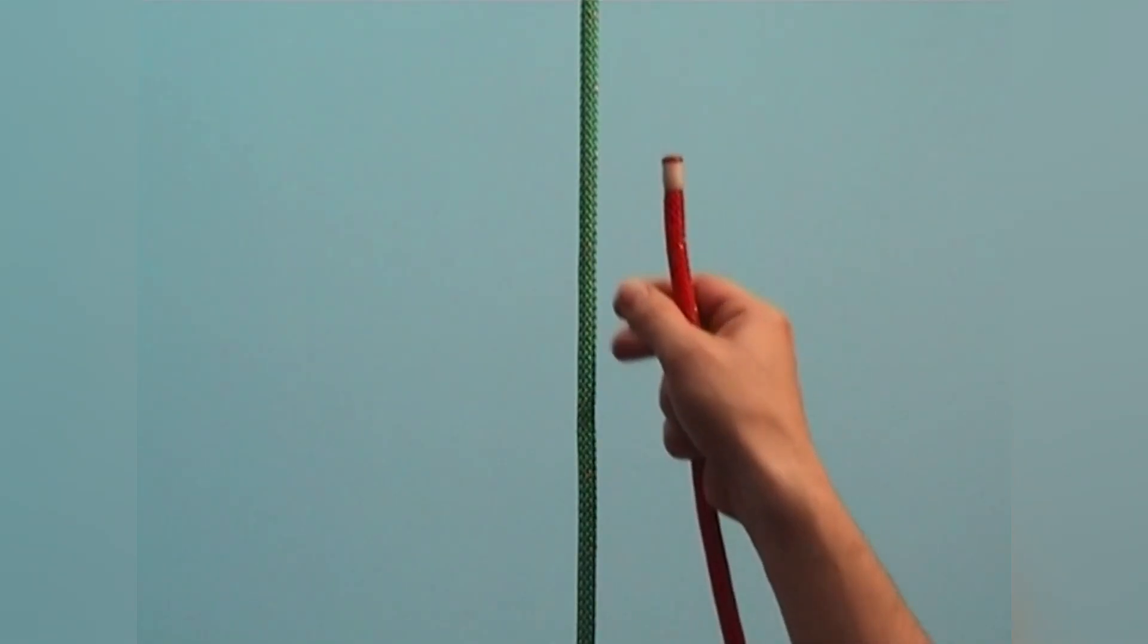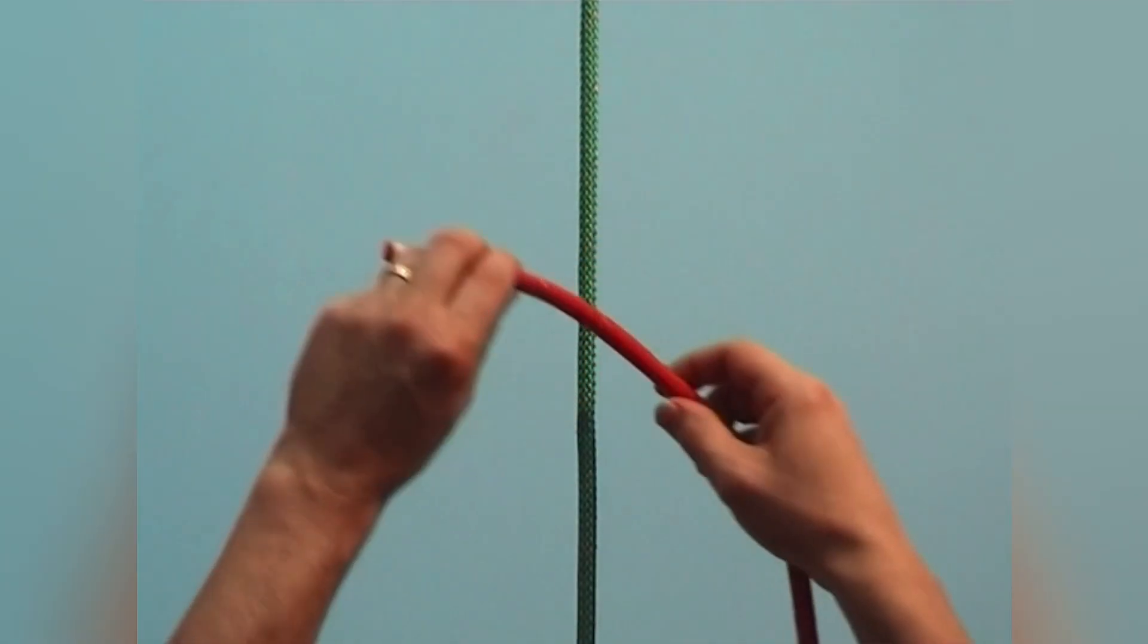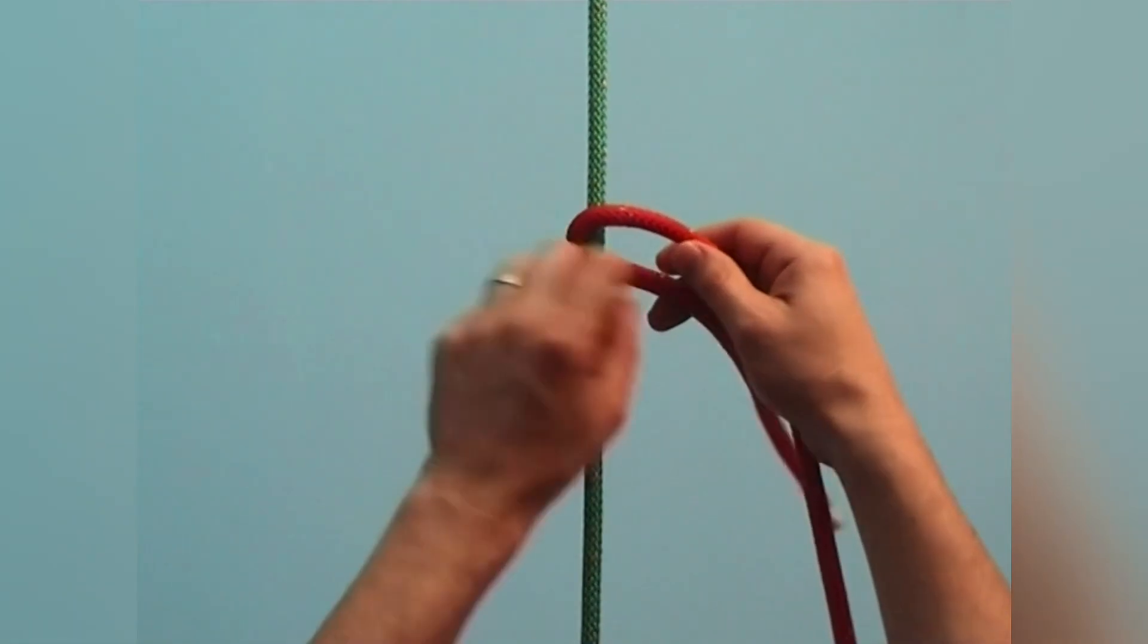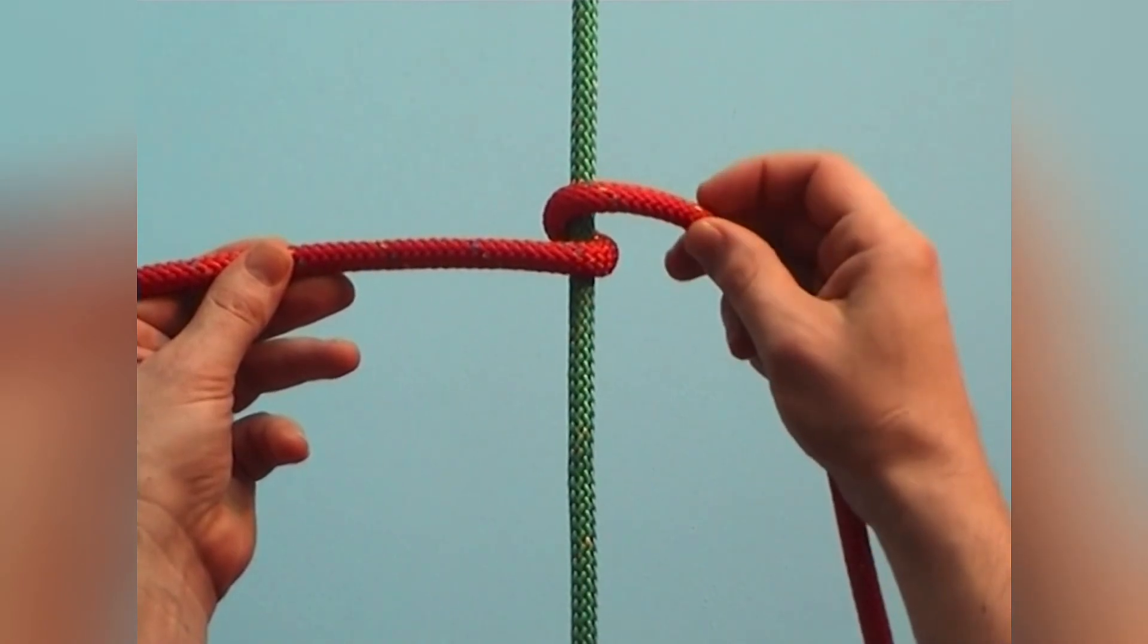To fasten onto another rope that will be pulled in this direction, go around the rope with the working end coming to rest on the same side to which we want to pull. Cross over here, but stay on the same side of the standing part.